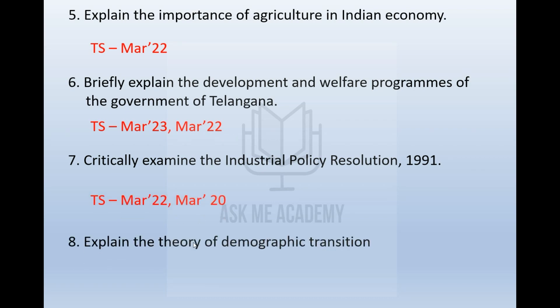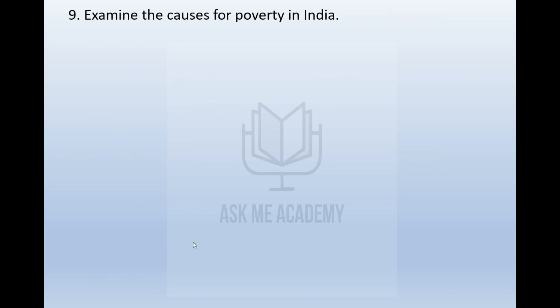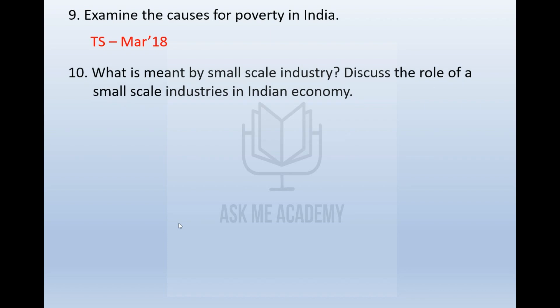The next question is: explain the theory of demographic transition — asked once. Then, examine the causes for poverty in India — asked once. The next question is: what is meant by small scale industry? Discuss the role of small scale industries in the Indian economy — asked once.